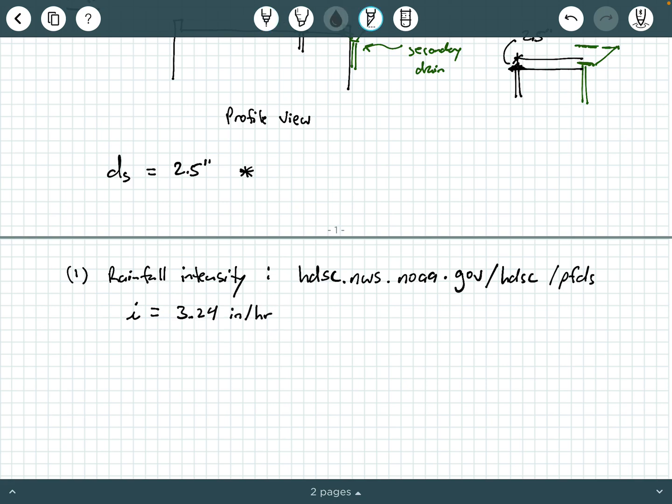So sometimes if you see a problem just in an academic setting, you may be given the rainfall intensity in the problem statement. In real life, you can look it up on this website or you talk to your water resource engineer, your hydraulics or hydrology professional, and they can give you a good idea of what to use for i.